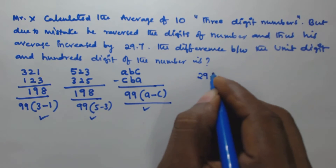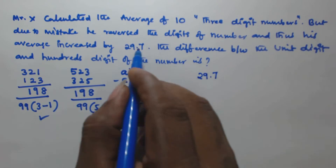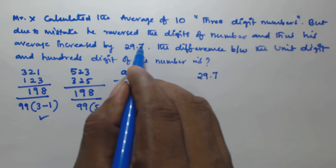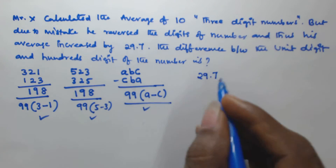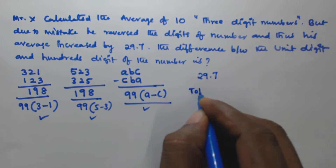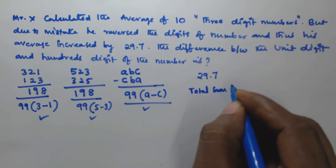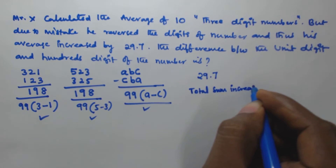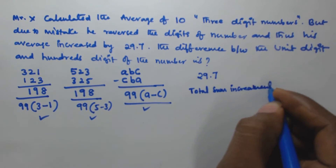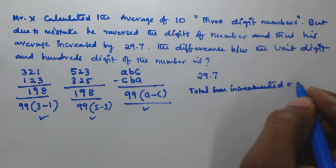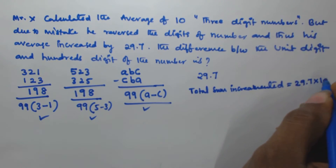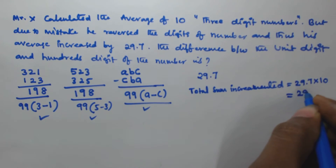It is given that the average increased by 29.7. Since this is the average of 10 numbers, the total sum incremented is 29.7 × 10 = 297.